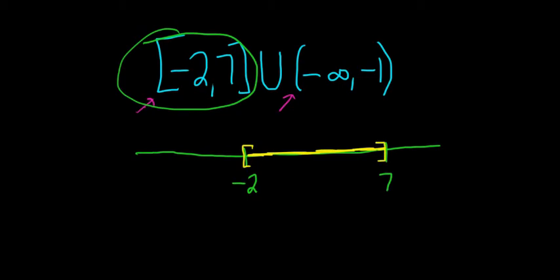Now we have to graph the second set, negative infinity to negative 1. So negative 1 is right over here. That's all the numbers less than negative 1. So we don't include the negative 1 according to this. And we would shade everything to the left, so it's all this yellow piece here.